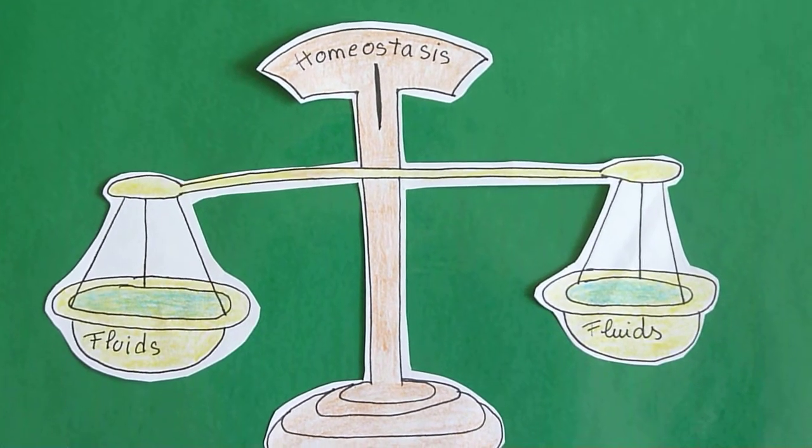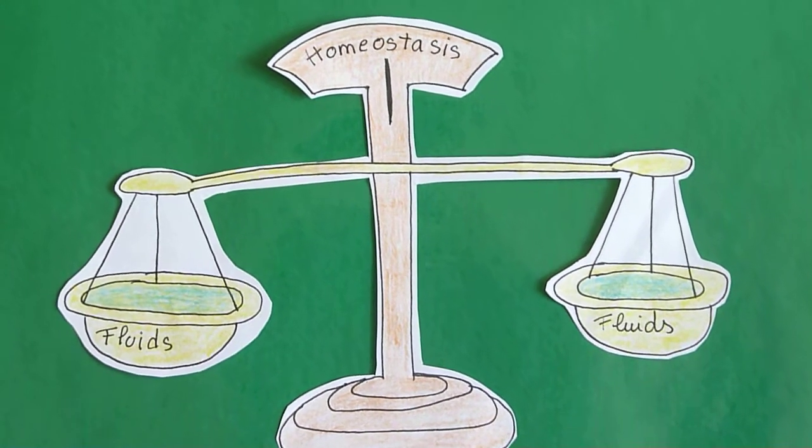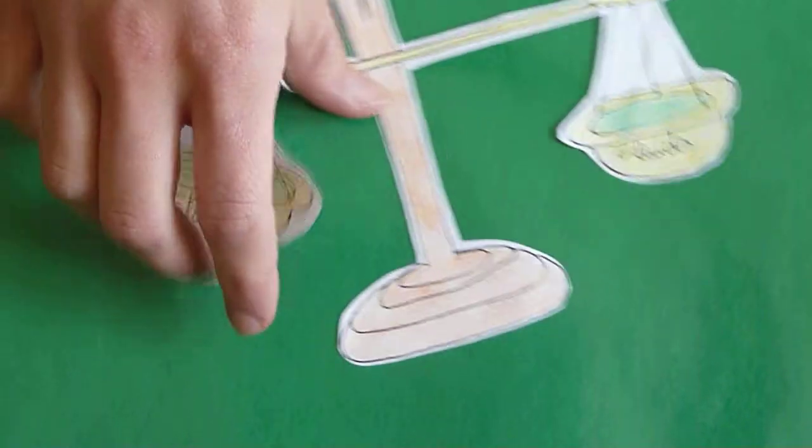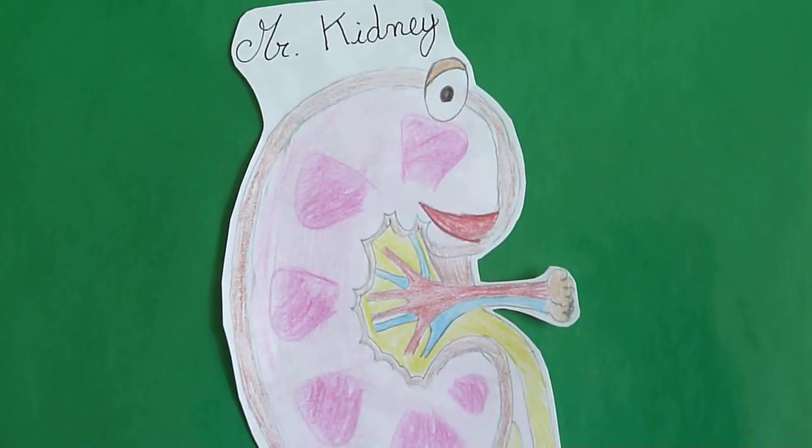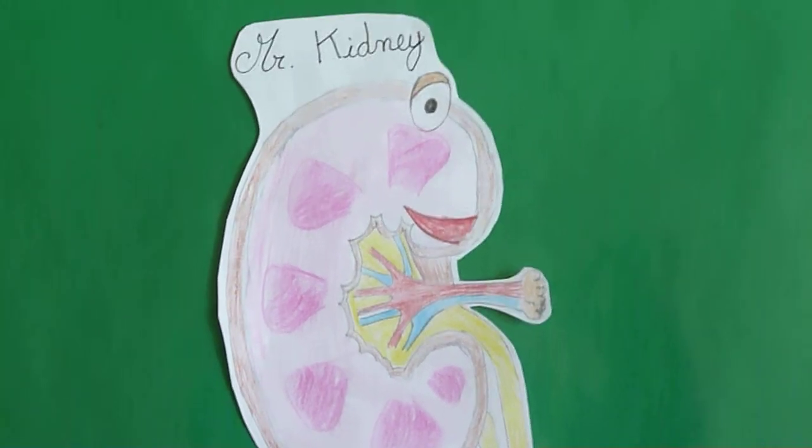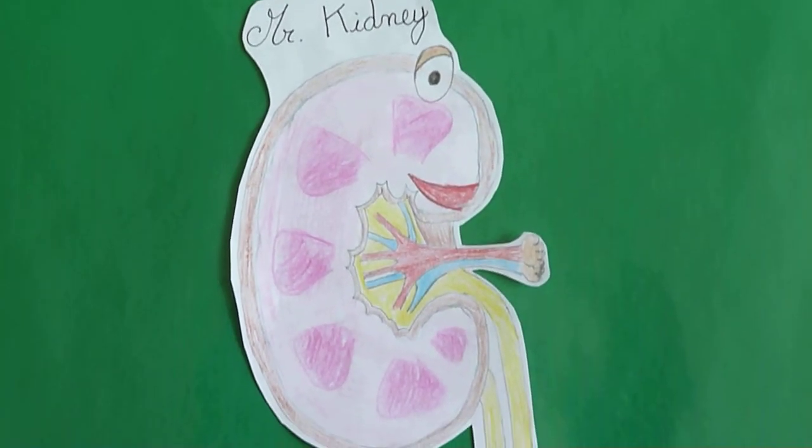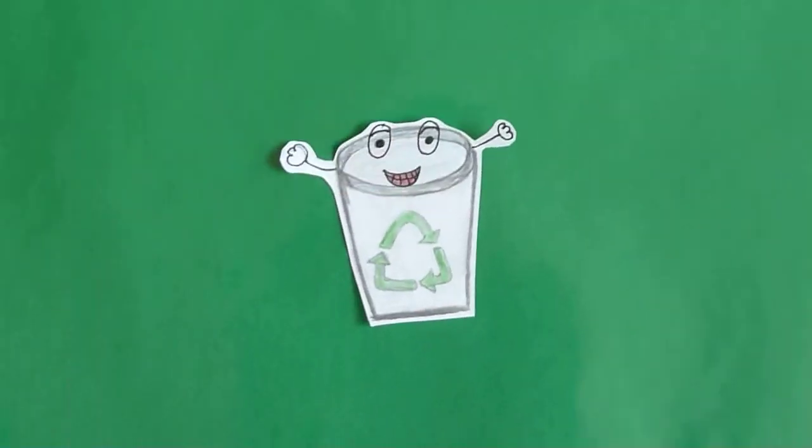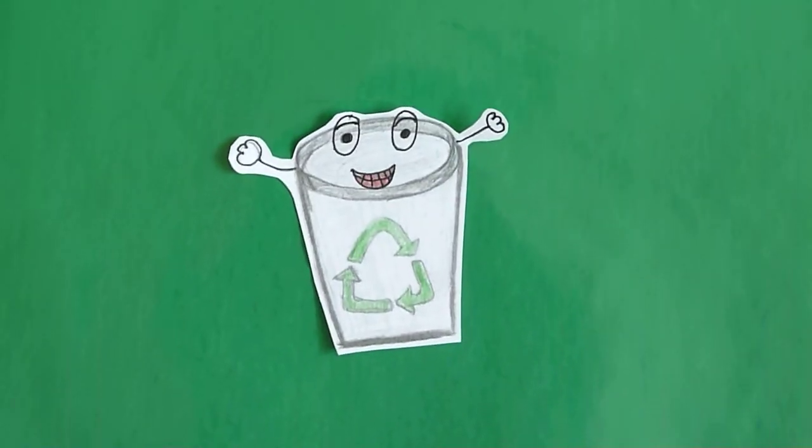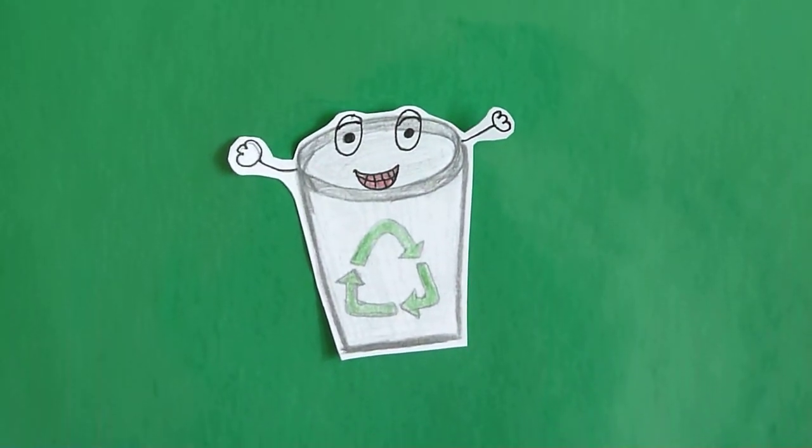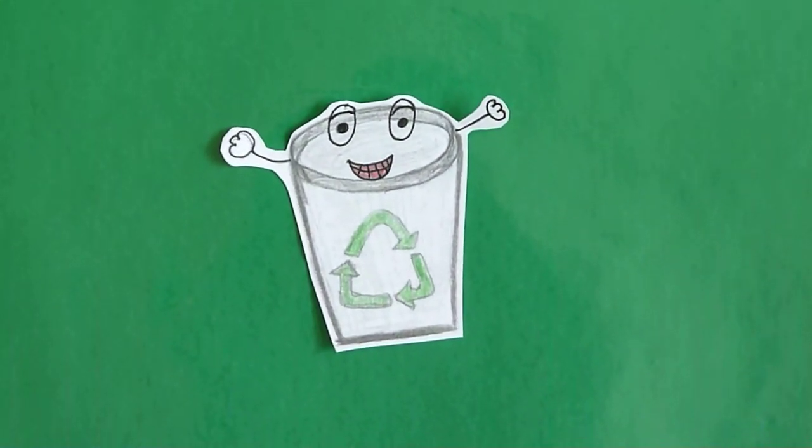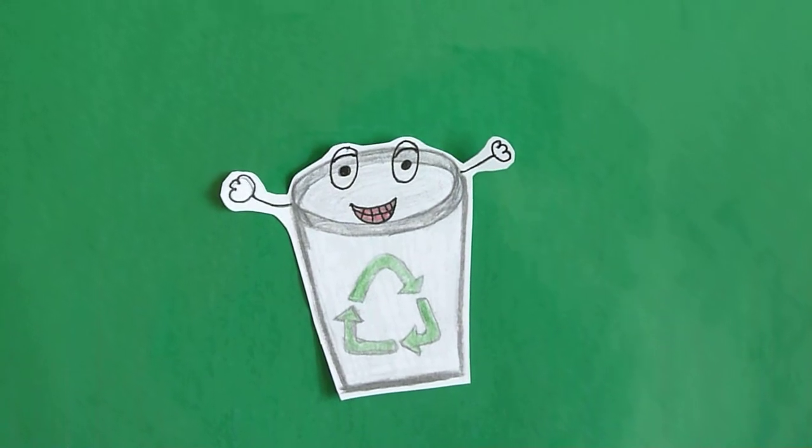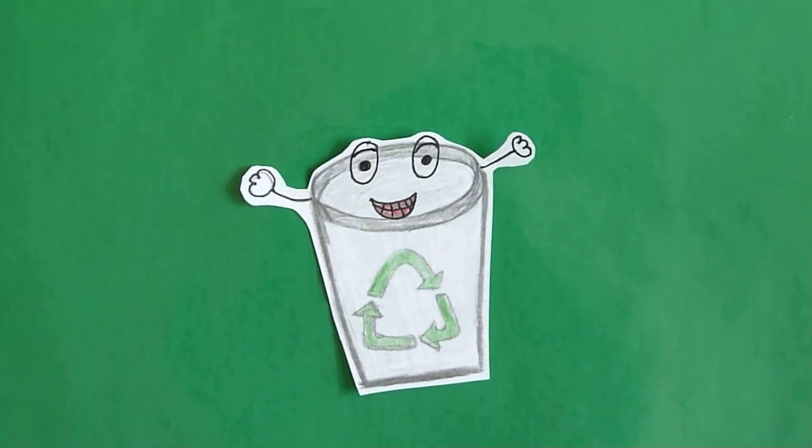In humans, one of the places where osmoregulation is key is in the kidney. So this is the kidney. The kidney's main function is to filter waste products from the blood. The bloodstream is constantly removing waste products from our body tissue, things like urea, a waste product from the metabolism of amino acids and proteins.